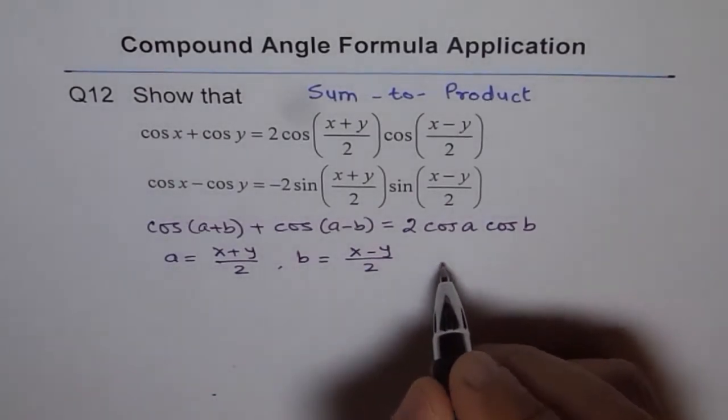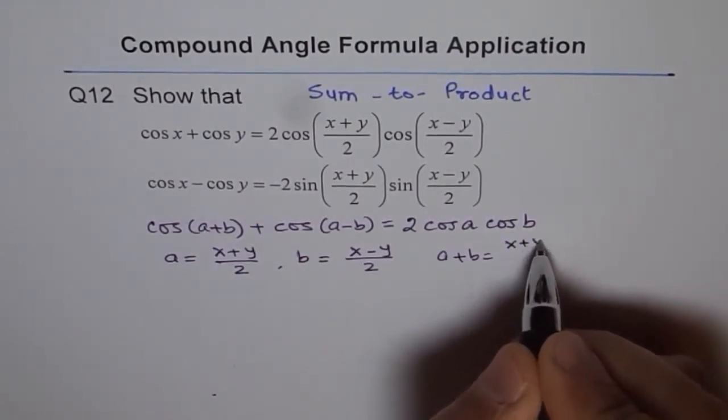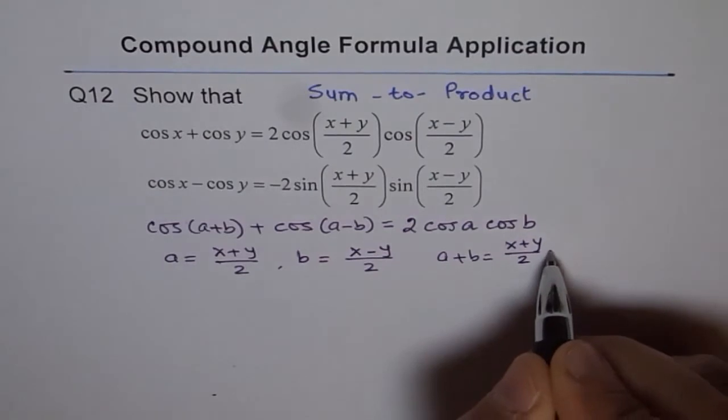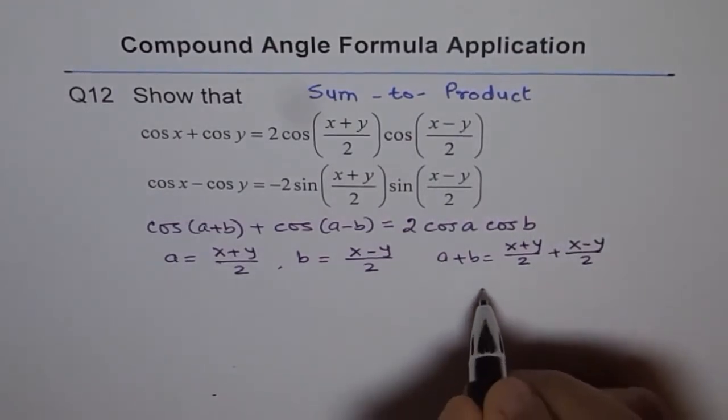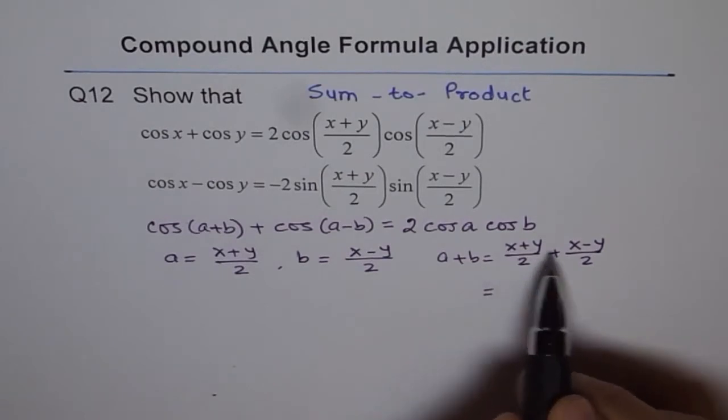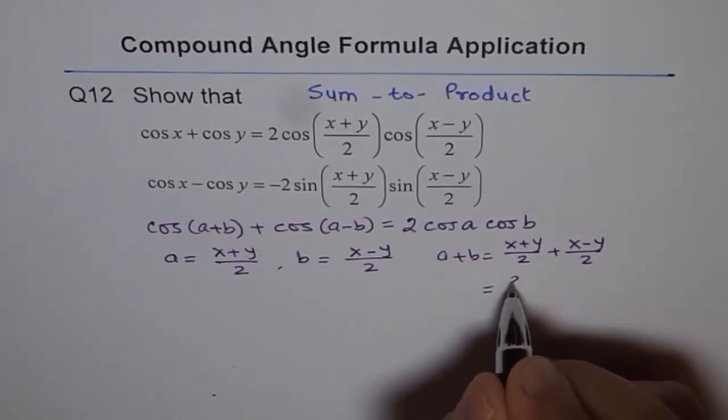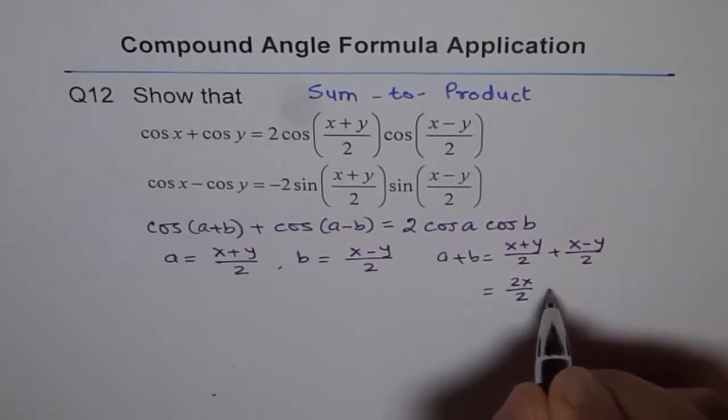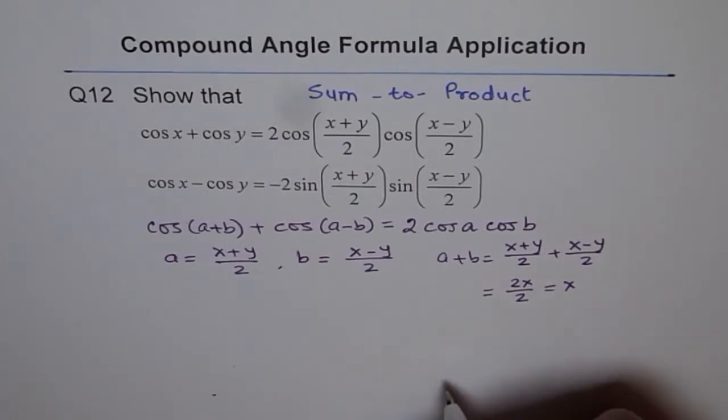Let's do a plus b. If I do a plus b, let me do it here, a plus b, then what will I get? I will get x plus y by 2 plus x minus y by 2. And that will lead to x plus x is 2x and y minus y is 0. So I get 2x by 2, which is equals to x. That means a plus b is x.